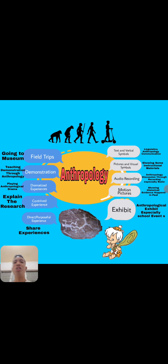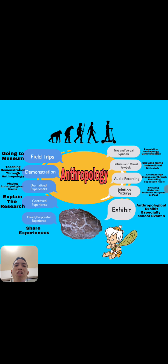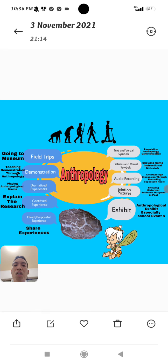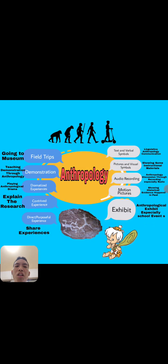The first is text and verbal symbols. Text and verbal symbols relate to linguistic anthropology communication, which involves using language, text, and verbal symbols.